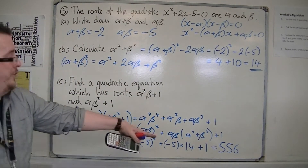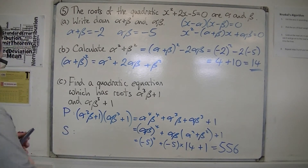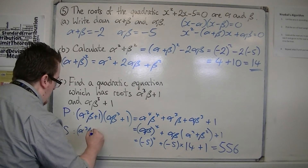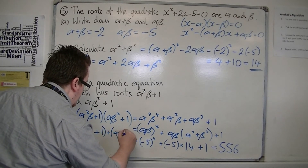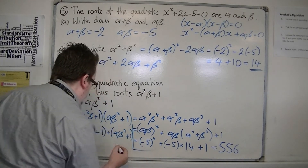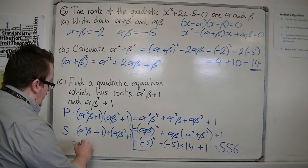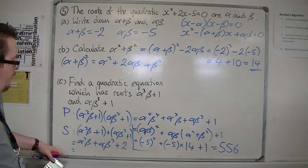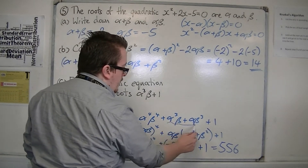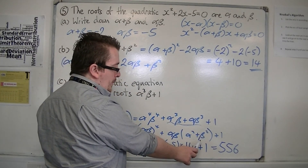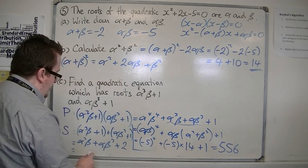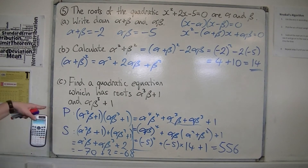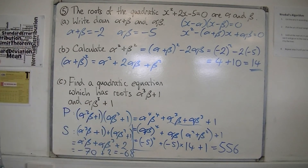So 556 is the product of the two roots. For the sum, adding the two roots together gives alpha cubed beta plus alpha beta cubed plus 2. Now alpha cubed beta plus alpha beta cubed equals alpha beta times (alpha squared plus beta squared), which is minus 5 times 14, giving minus 70. So the sum is minus 70 plus 2, which is minus 68.